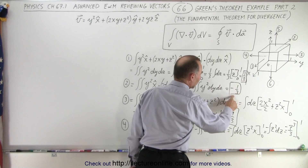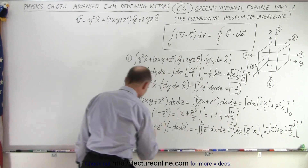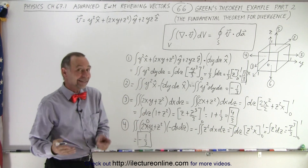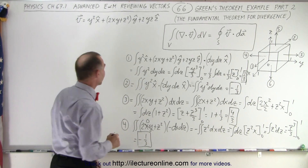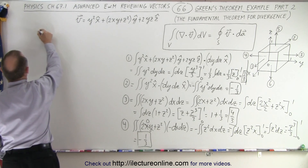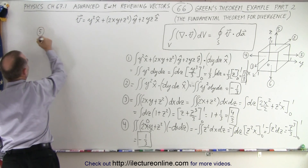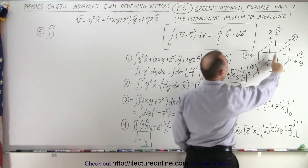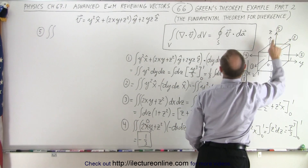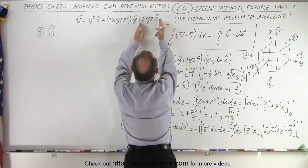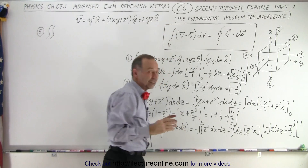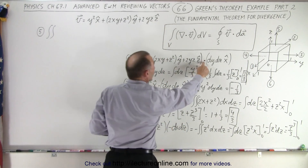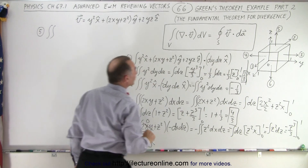So far we've integrated over four surfaces and got: 1/3, negative 1/3, 4/3, and negative 1/3. Adding those four together gives 1. Two more surfaces to go. For surface number 5, pointing directly up in the z direction, we only need the z component since x and y components won't survive the dot product.